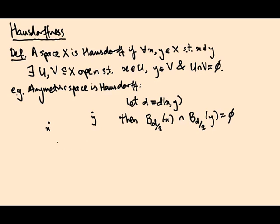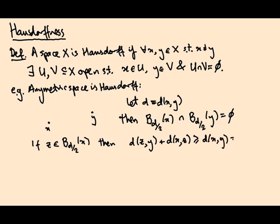Why is that? Well, if z is in the ball of radius half d around x, I want to show it's not in the ball of radius half d around y. The distance from z to y plus the distance from x to z is greater than or equal to, by the triangle inequality, the distance from x to y, which is d. The distance from x to z is less than d over 2, so this whole expression is less than d(z,y) plus d over 2. If I just subtract off the d over 2, I get that the distance from z to y is bigger than or equal to d over 2.